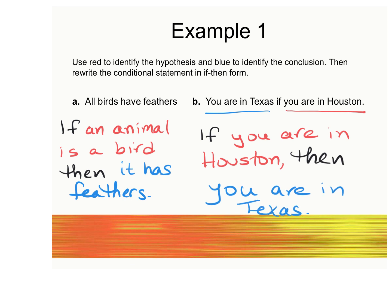This is a true statement. However, if I flip this to the converse — if you are in Texas, then you're in Houston — that would possibly be a false statement, because you could be in a different city in Texas like Dallas. So not always will the conditional and its converse both be true, and therefore you couldn't write a biconditional for this one because the converse is not true.